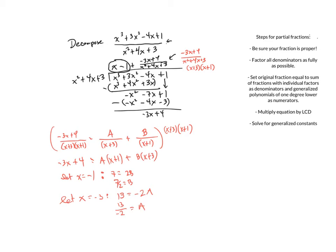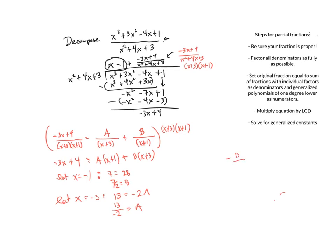So the decomposition of the fractional part is negative 13 over 2x plus 6 plus 7 over 2x plus 2. But remember we had a whole number part, x minus 1. Adding that to the front gives the full decomposition of the original fraction.